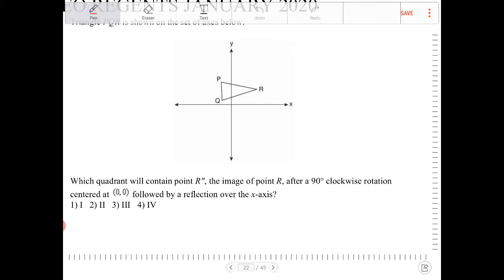So if I were to rotate, well, go through the transformation, go through the rigid motion in the order in which they are prescribing it. So I'm rotating this triangle over a 90 degree clockwise rotation over 0,0.